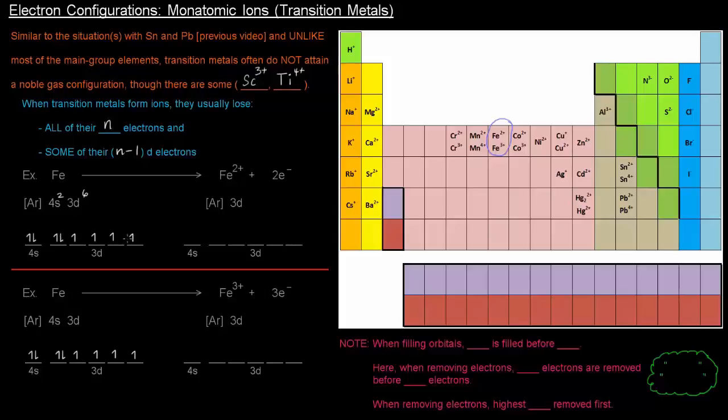If it loses 2 electrons, which 2 electrons is it losing? Well, it's going to lose the electrons from the highest energy level, which is 4 in this case. So, it's going to lose those 2 4s electrons. And so, the orbital diagram will look like this.